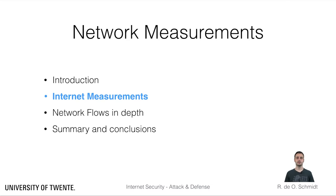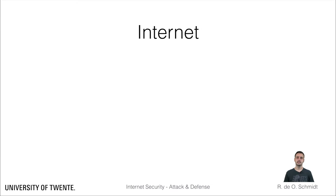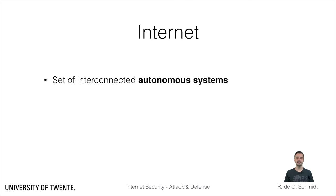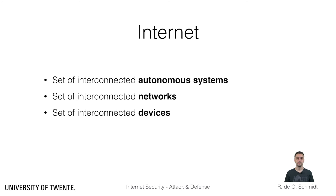Welcome! My name is Ricardo Schmidt and in this set of slides I will give an overview of Internet measurements. At its lowest granularity, the Internet is a set of interconnected autonomous systems. Autonomous systems are a set of interconnected networks, which consist of a set of interconnected devices. Every device runs a set of applications that can somehow make use of all this interconnectivity.